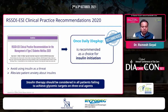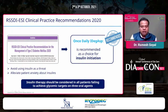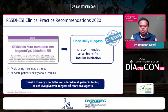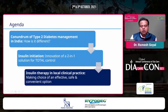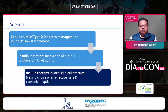Some words of wisdom from our guidelines: avoid using insulin as a threat in front of patients and elevating their anxiety about insulin. Insulin therapy should be considered in all patients willing to achieve glycemic targets on three oral agents. This brings me to the third point of my agenda: insulin therapy in local clinical practice — making the choice of an effective, safe, and convenient option in the Indian scenario.